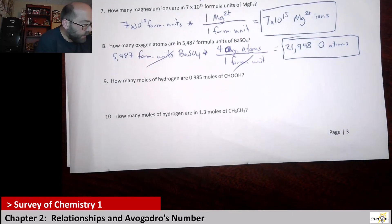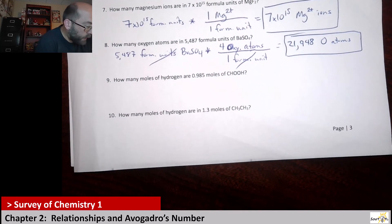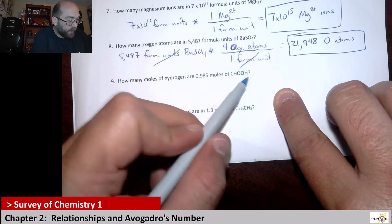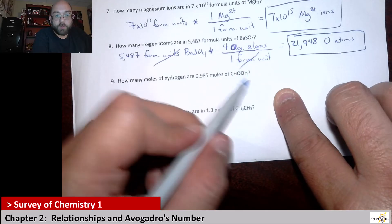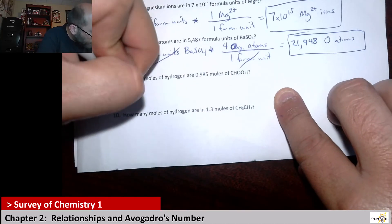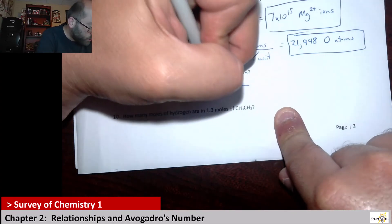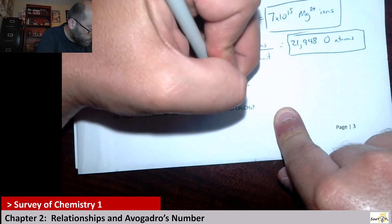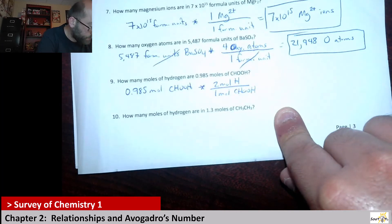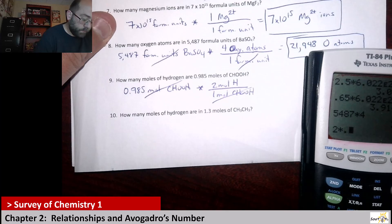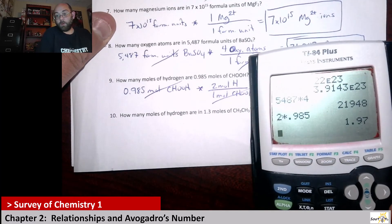Number 9 says: how many moles of hydrogen are in 0.985 moles of HCOOH? It's kind of the same thing — since one molecule has two hydrogens, one mole of this would have two moles of hydrogen. So if we have 0.985 moles of HCOOH, there are two moles of hydrogen for every one mole of HCOOH. The mole of HCOOH cancels, and it's just 2 times 0.985, which is 1.97 moles of hydrogen.